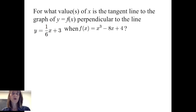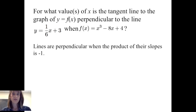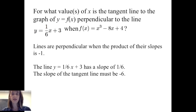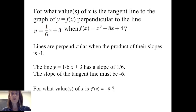For what values of x is the tangent line to the graph of y equals f of x perpendicular to the line y equals one-sixth x plus 3, when f of x equals x cubed minus 8x plus 4? Lines are perpendicular when the product of their slopes is negative 1. The slope of y equals one-sixth x plus 3 is one-sixth, so the tangent line I'm looking for must have a slope of negative 6. So I want to know for what values of x is f prime of x equal to negative 6.